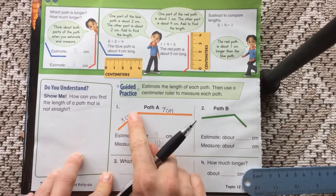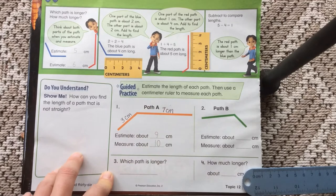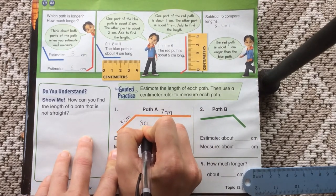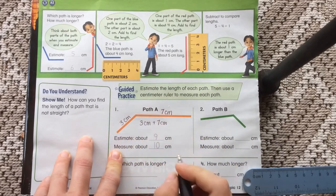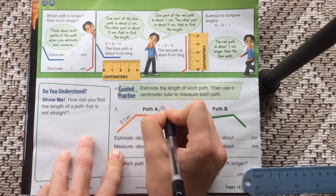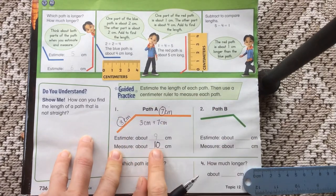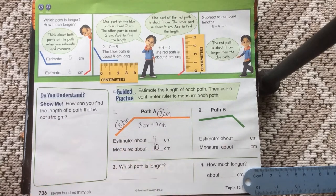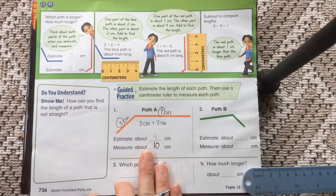Now to find the length of the whole path I am going to need to add those two together. So that would be three centimeters plus seven centimeters. You don't need to write this. You do need to add these two numbers. And then you need to add them for your measurement. What I forgot to do is estimate. So hopefully you can make a guess.